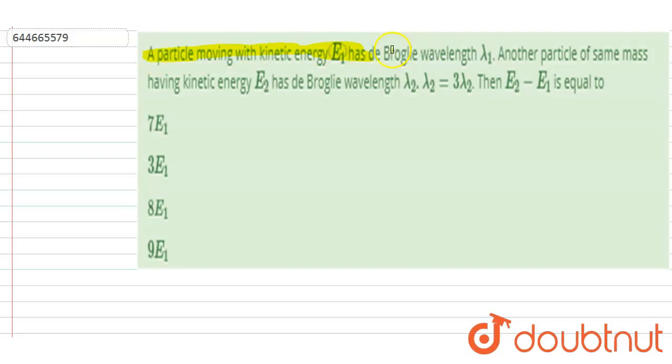...kinetic energy E1 has de Broglie wavelength λ1. Another particle of same mass having kinetic energy E2 has de Broglie wavelength λ2. λ2 is 3 times λ1. Then you have to find out E2 minus E1.